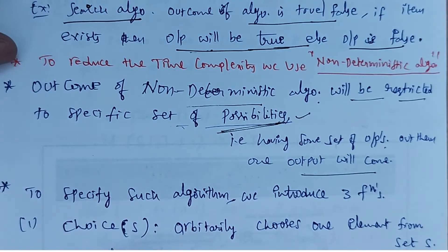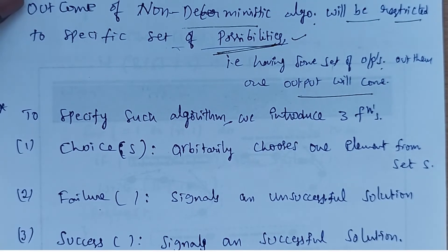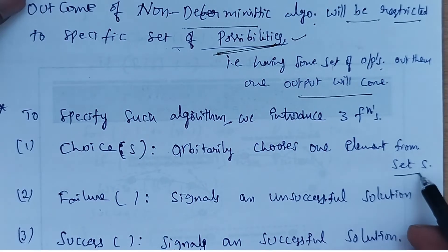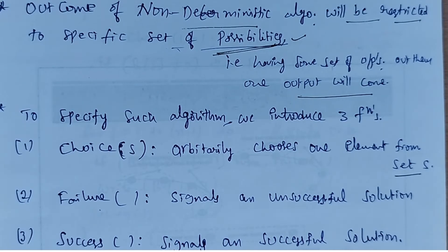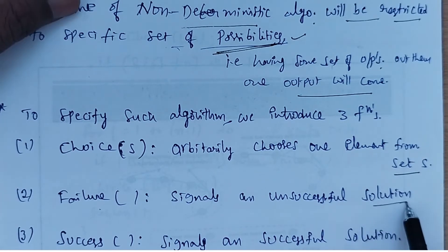The three functions are: choice, failure, and success. Choice arbitrarily chooses one element from the given set. Failure is a signal — when the problem is unsuccessful, it produces a signal like unsuccessful solution.